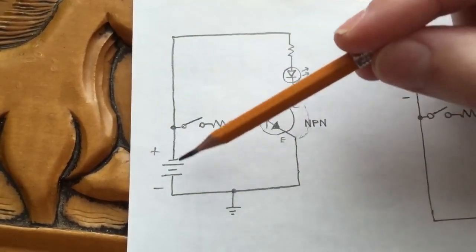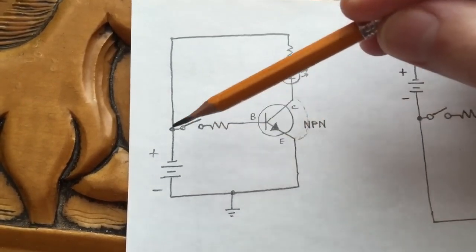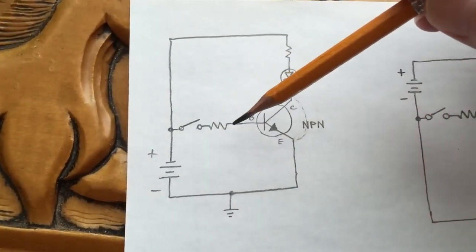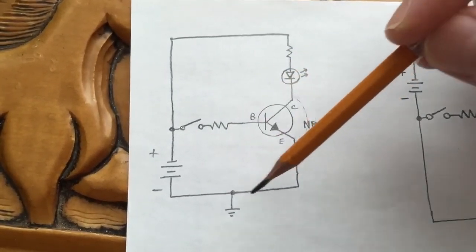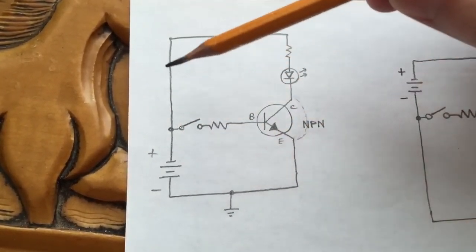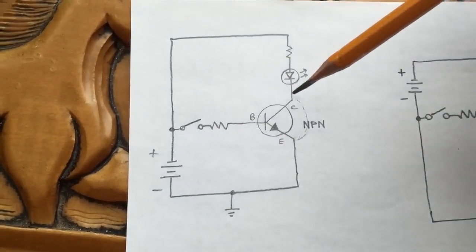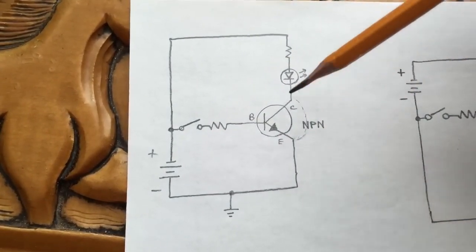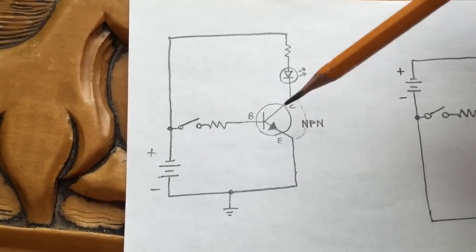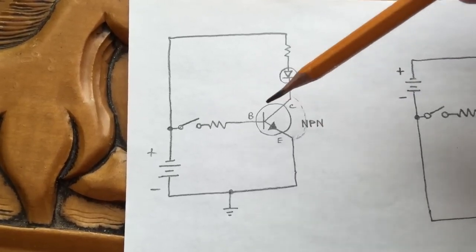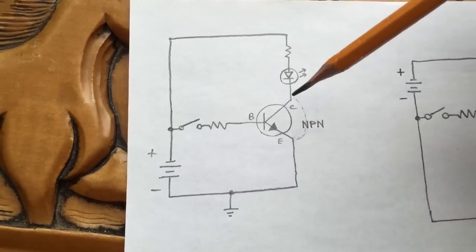We have a small circuit turning the transistor on with a small current, and we have another, larger circuit that lights the LED. The switch that interrupts that current path is the transistor between the collector and emitter terminals.